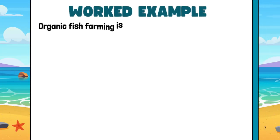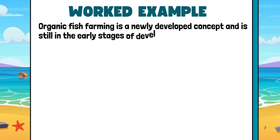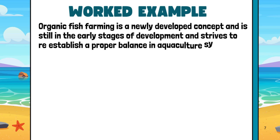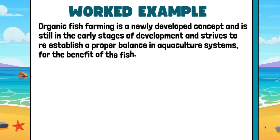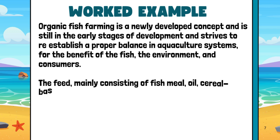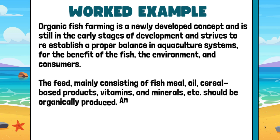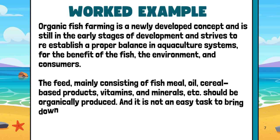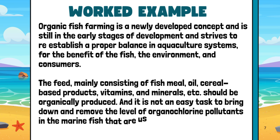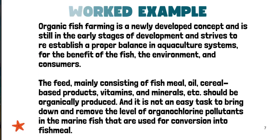Worked example. Organic fish farming is a newly developed concept, still in the early stages of development, striving to re-establish a proper balance in aquaculture systems for the benefit of the fish, the environment, and consumers. The feed, mainly consisting of fish meal, oil, cereal-based products, vitamins, and minerals, should be organically produced. It is not an easy task to remove the level of organochlorine pollutants in the marine fish that are used for conversion into fish meal.